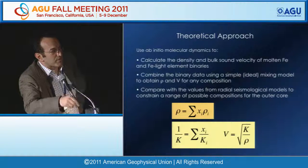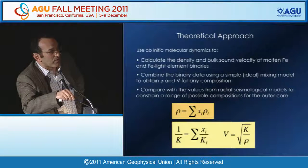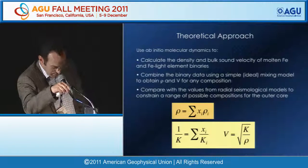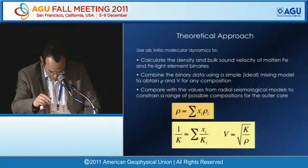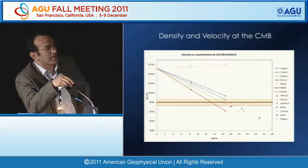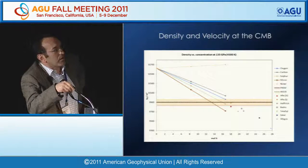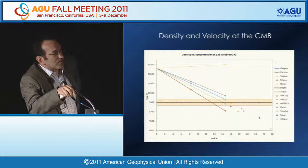Sometimes the samples are too small, so we switch to the computer. We use ab initio first-principles molecular dynamics, work carried out by Alex Cote at University College London in collaboration with John Brodholt, to calculate the density and bulk sound speeds of molten iron and molten iron–light element binaries. We combine this data with a simple ideal mixing model to obtain density and velocity for any composition and compare with seismic observables.